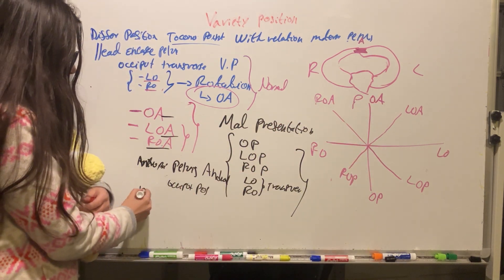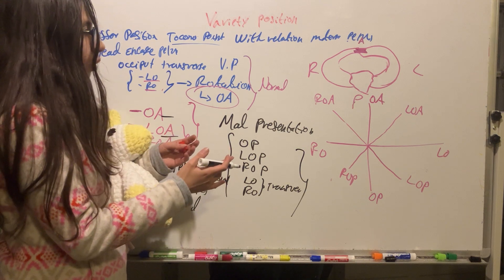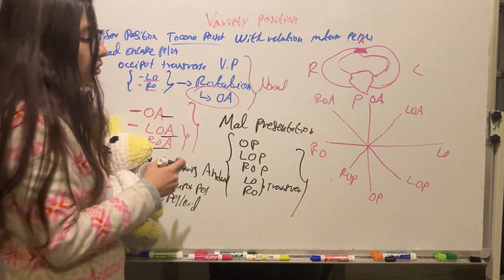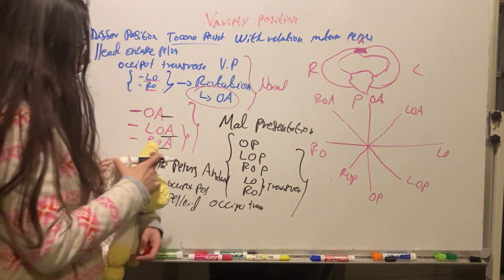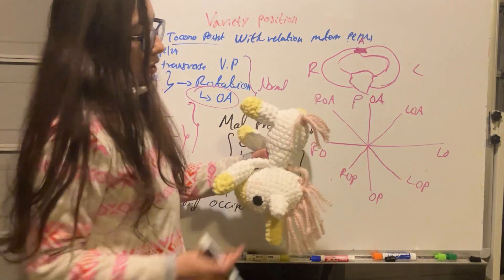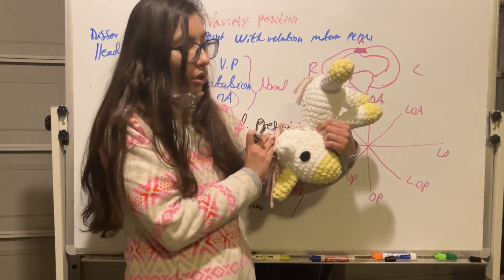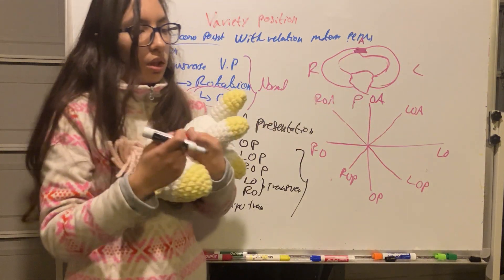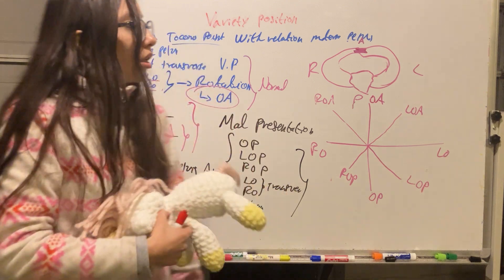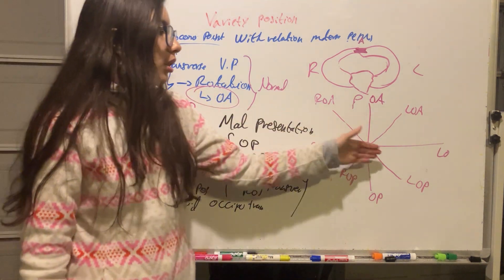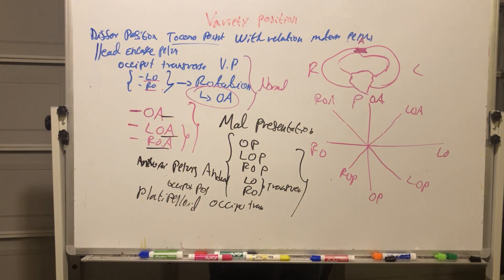Another example is a platypelloid pelvis. In a platypelloid pelvis, the head enters with a tokenomic point variety of position of occiput transverse — left occiput or right occiput. Instead of achieving occiput anterior, the head remains in a transverse position and the baby is delivered in a platypelloid pelvis this way. These are very tough deliveries. So normal is entering in a transverse position and rotating towards occiput anterior.